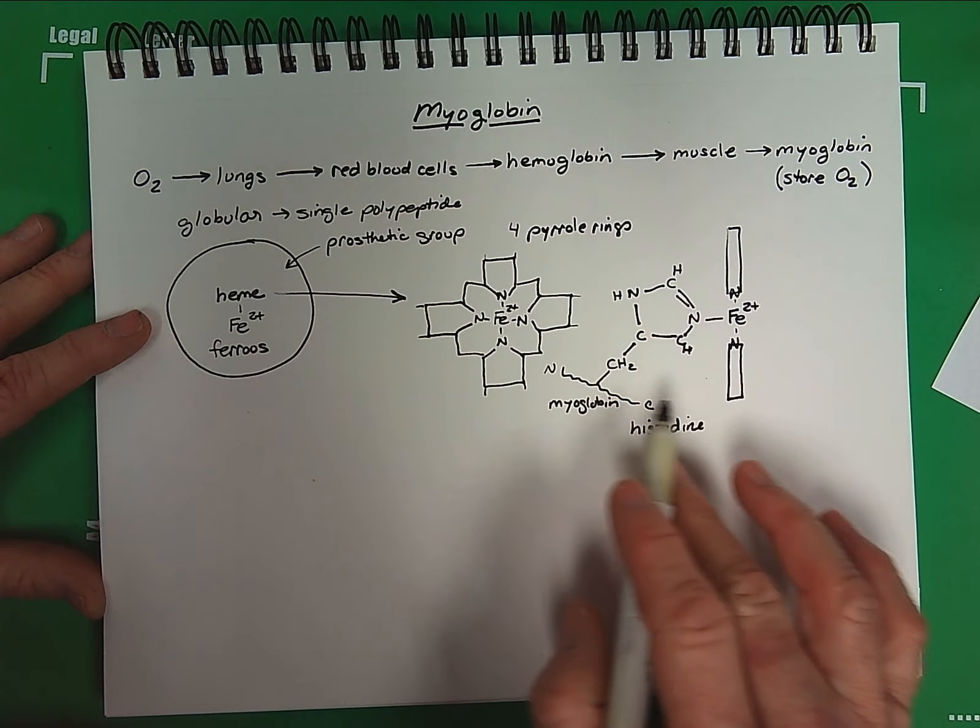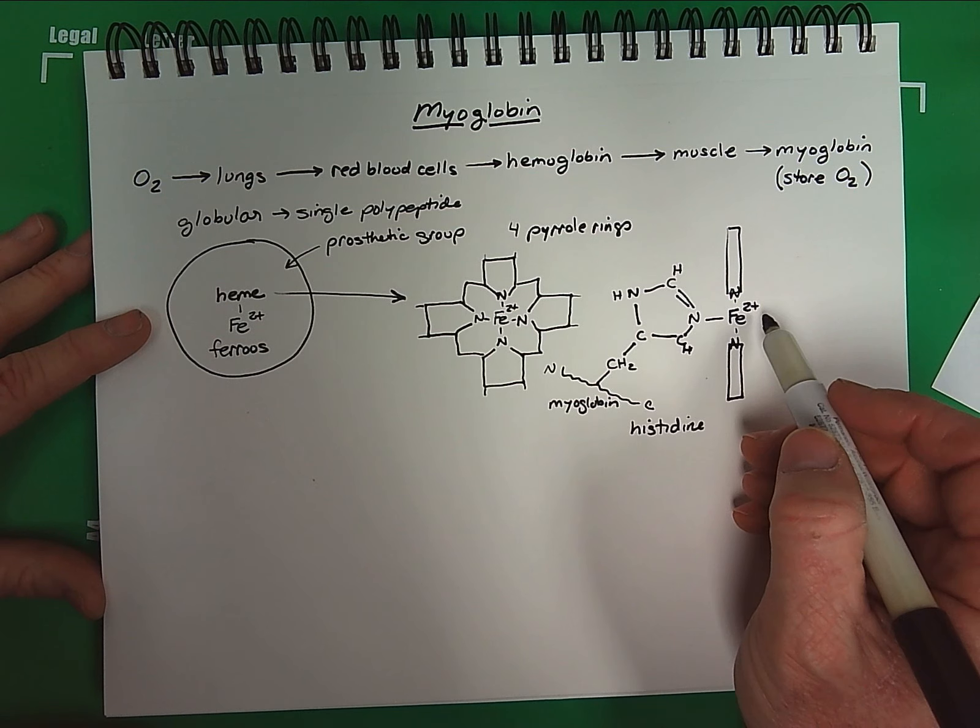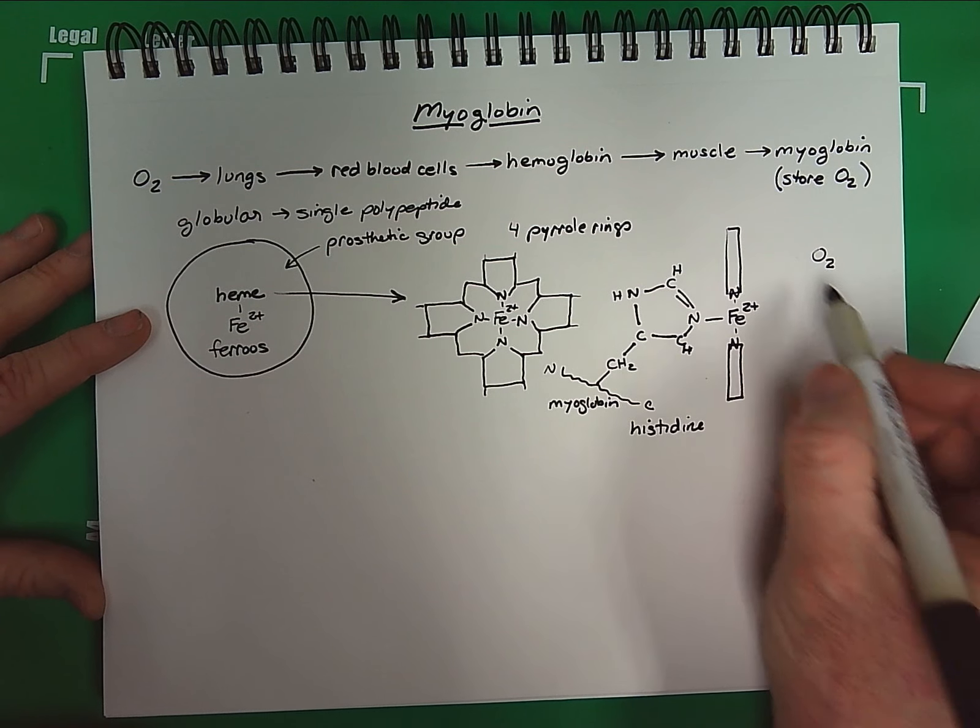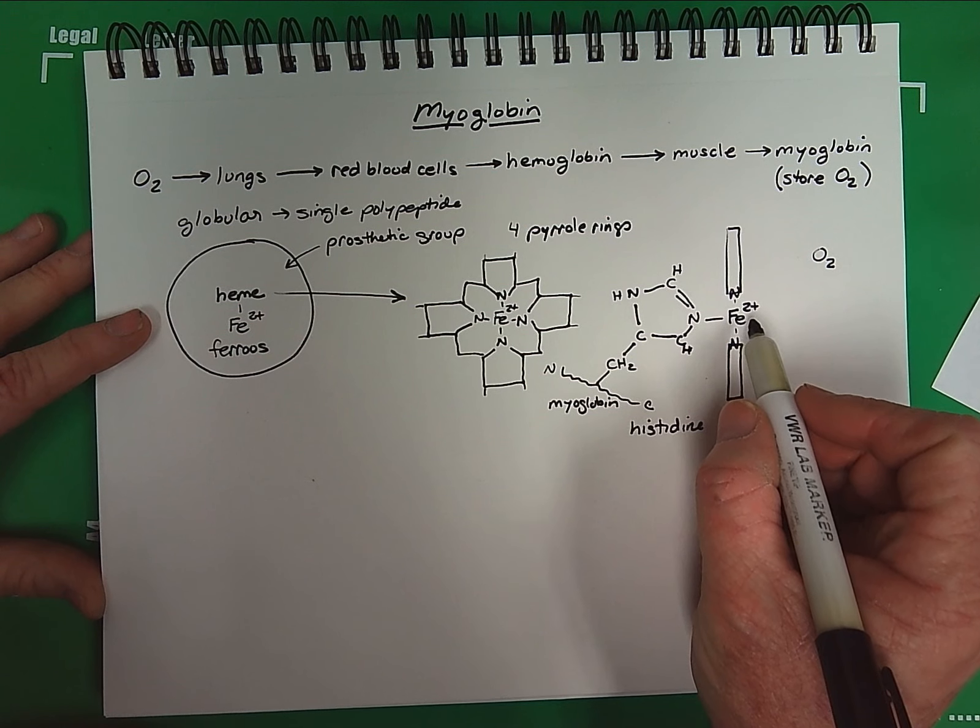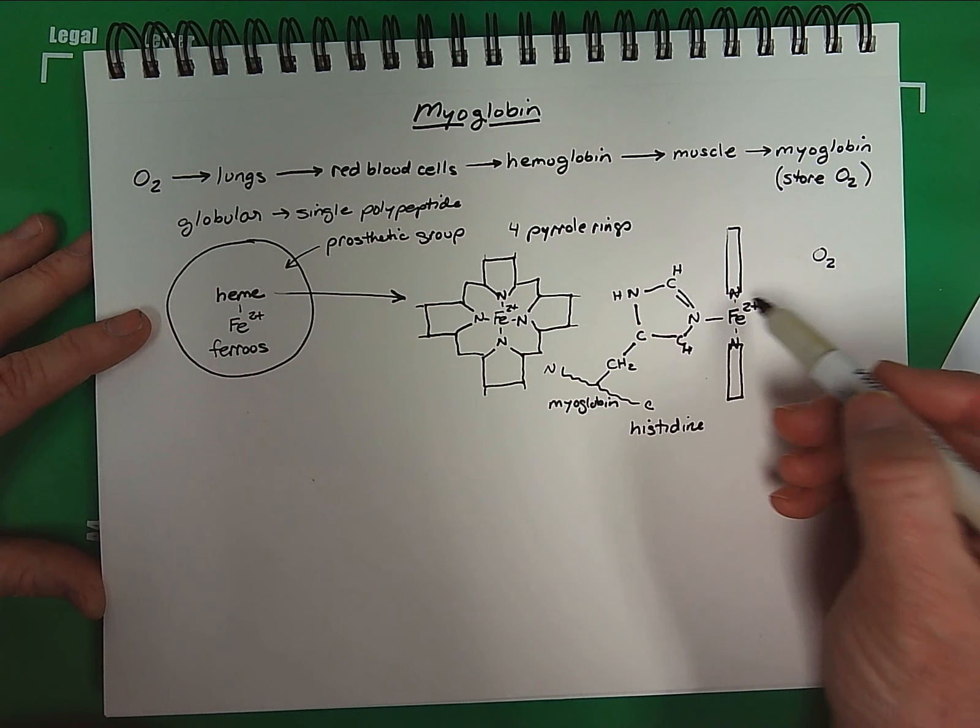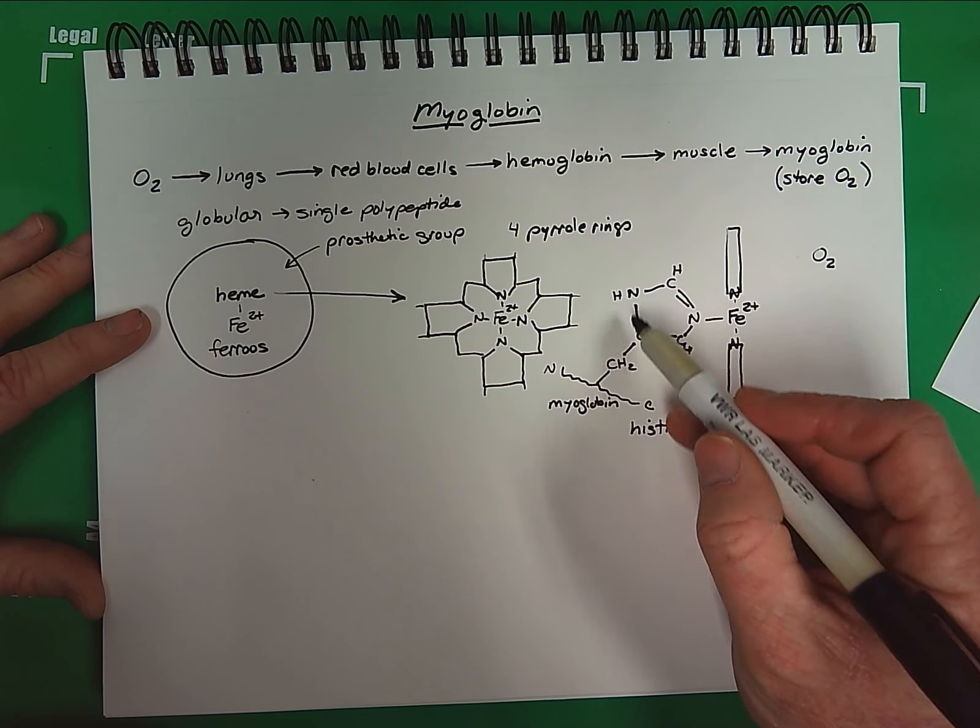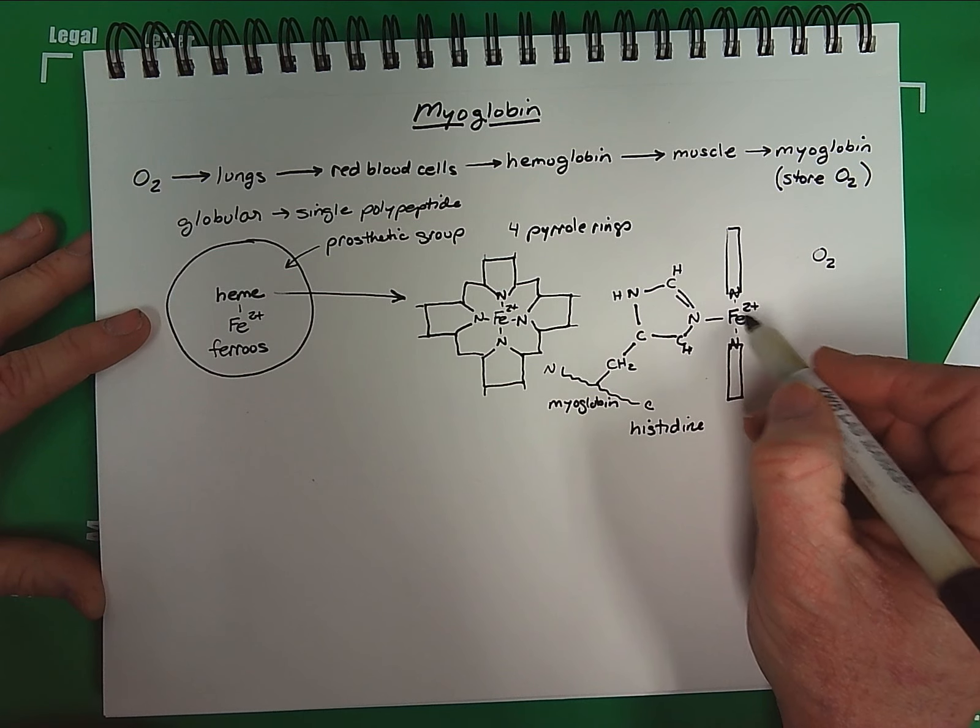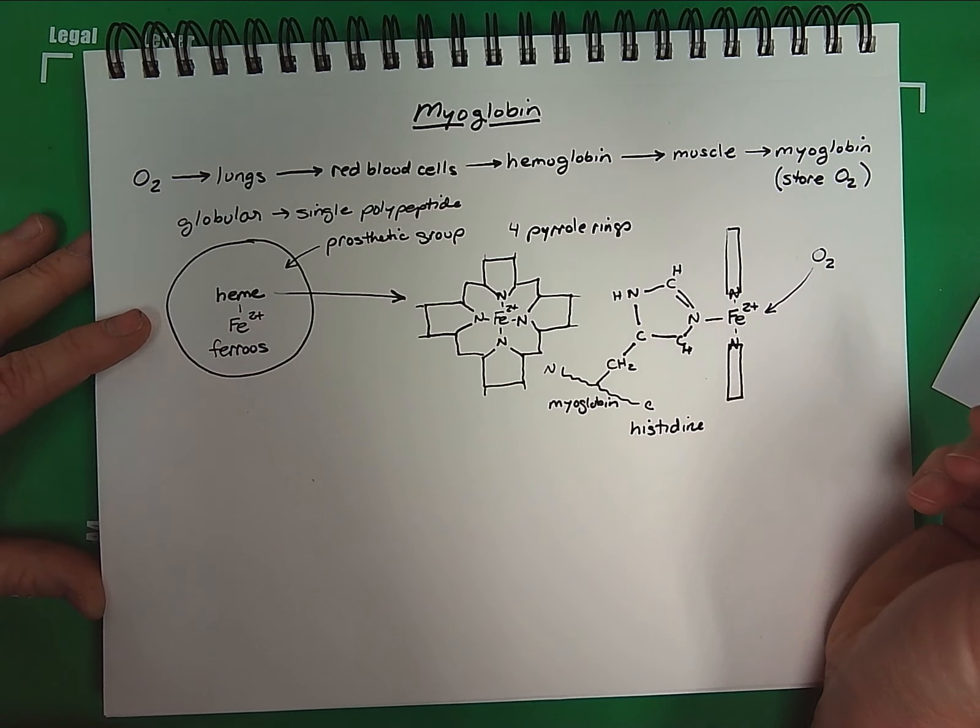So this is how the heme is anchored within the structure of myoglobin. Now what we have here is an opportunity for oxygen to form the final and sixth bound substance to iron. So we have four binding sites in the pyrrole rings, a fifth binding site with the histidine side chain, and now the sixth binding site on iron can be occupied by oxygen.